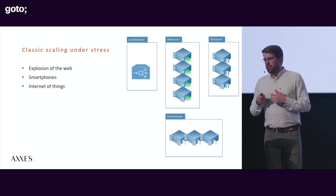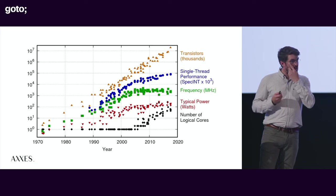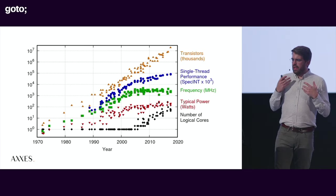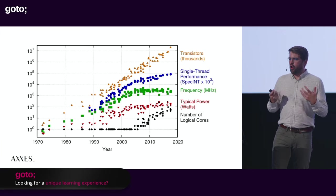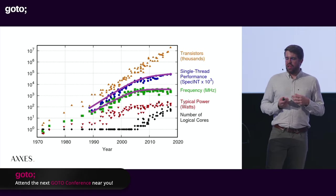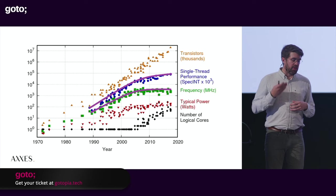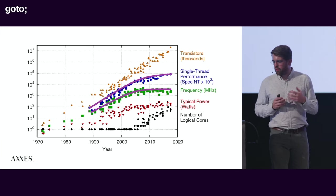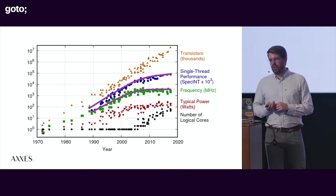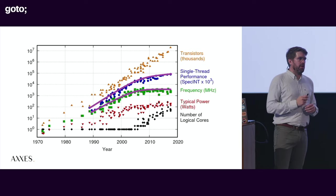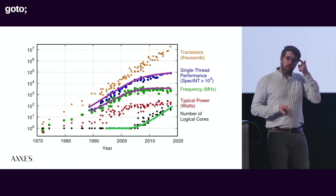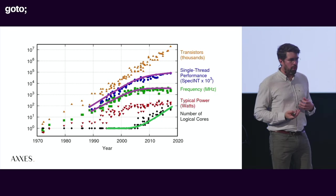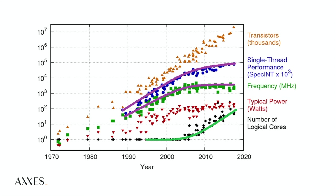Looking at processor data over four decades, we see that single-thread performance is flattening out and clock frequency has stabilized for more than a decade. We had Pentium 4s we could overclock with liquid nitrogen to five gigahertz, but we can't really get much further today. The only metric that is cause for hope is the number of cores — from single-core Pentium 3s when I started programming to six, eight, or even twelve cores in your pocket today.